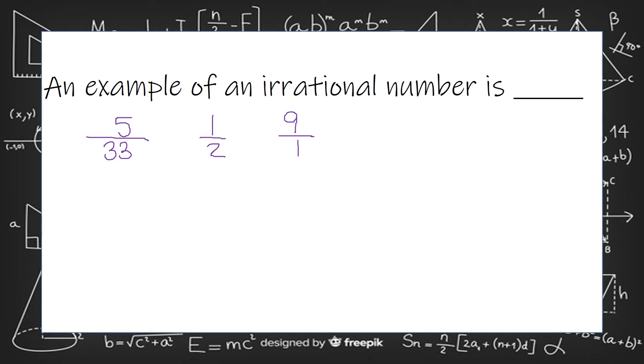Those are rational numbers. Now an irrational number is any number that cannot be put into a fraction. A lot of times you see those with square roots of any number that's not a perfect square. Remember your perfect square are numbers like 4, 9, 16, 25, 36.